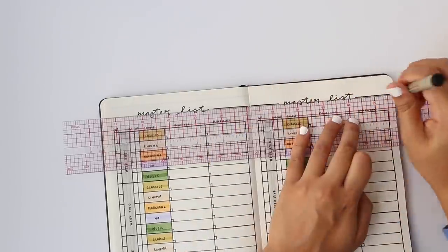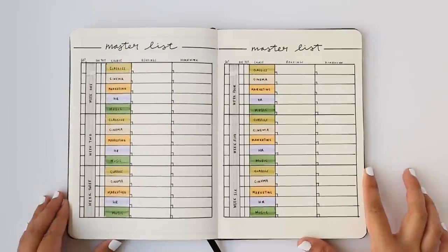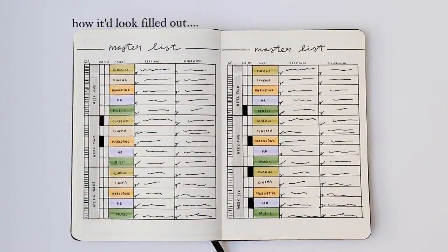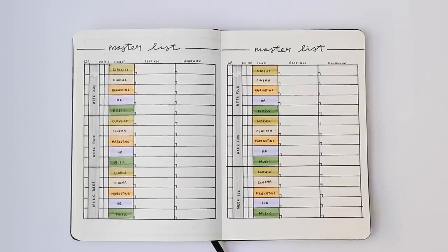You could also remove the mini attendance tracker and test due date indicators if you wanted to make your readings and homework columns a little bit bigger. But I'm super happy with how this one turned out. I almost feel like I need to create a version for work life.